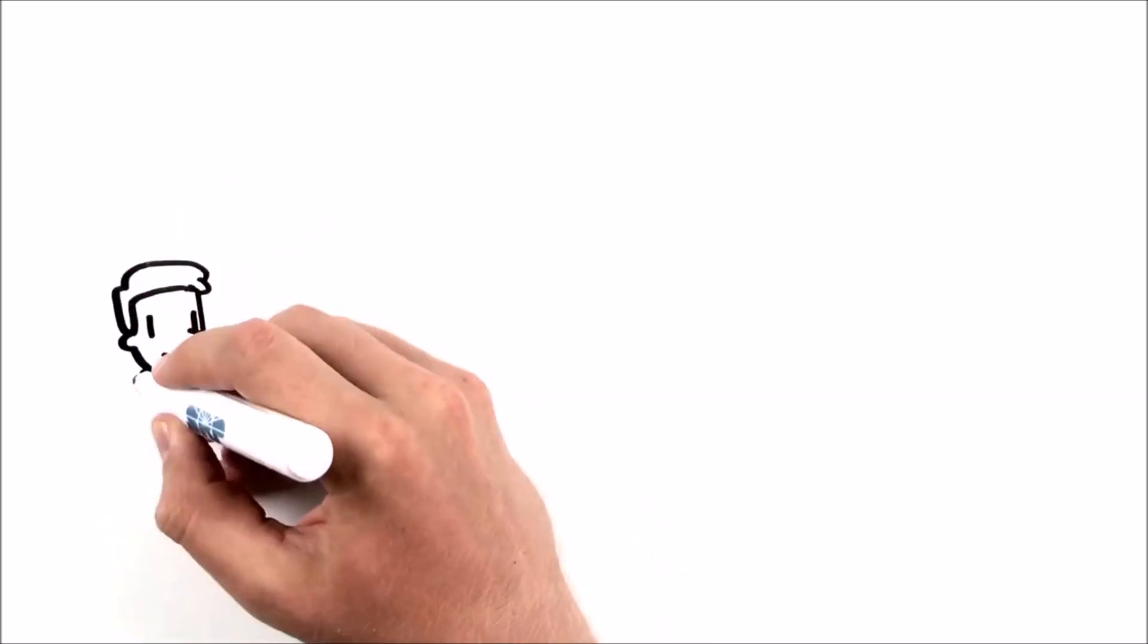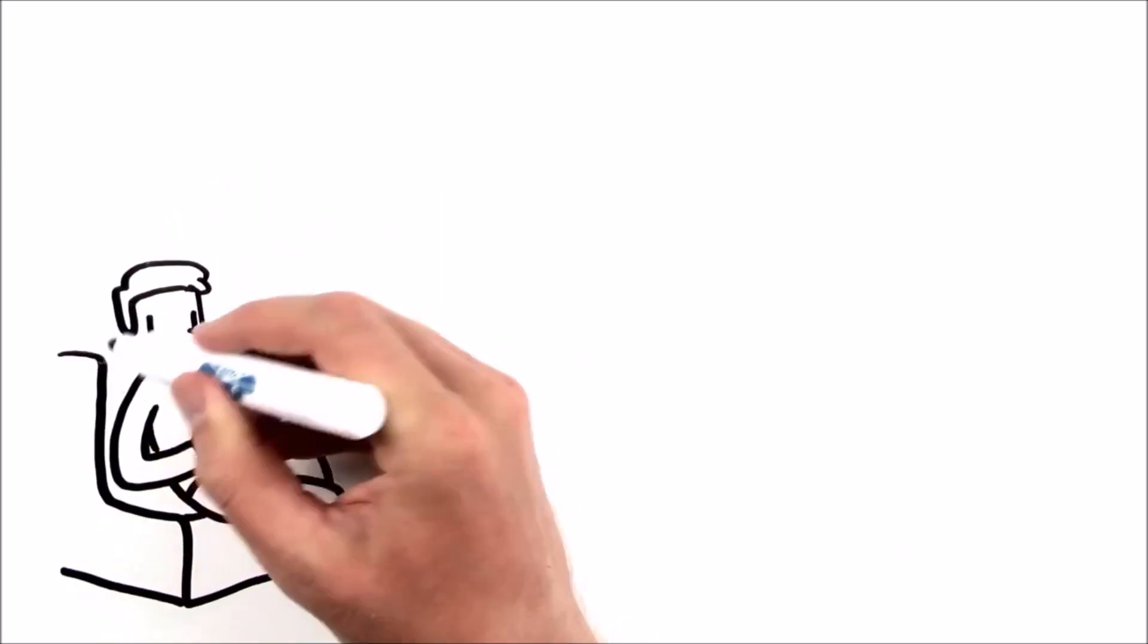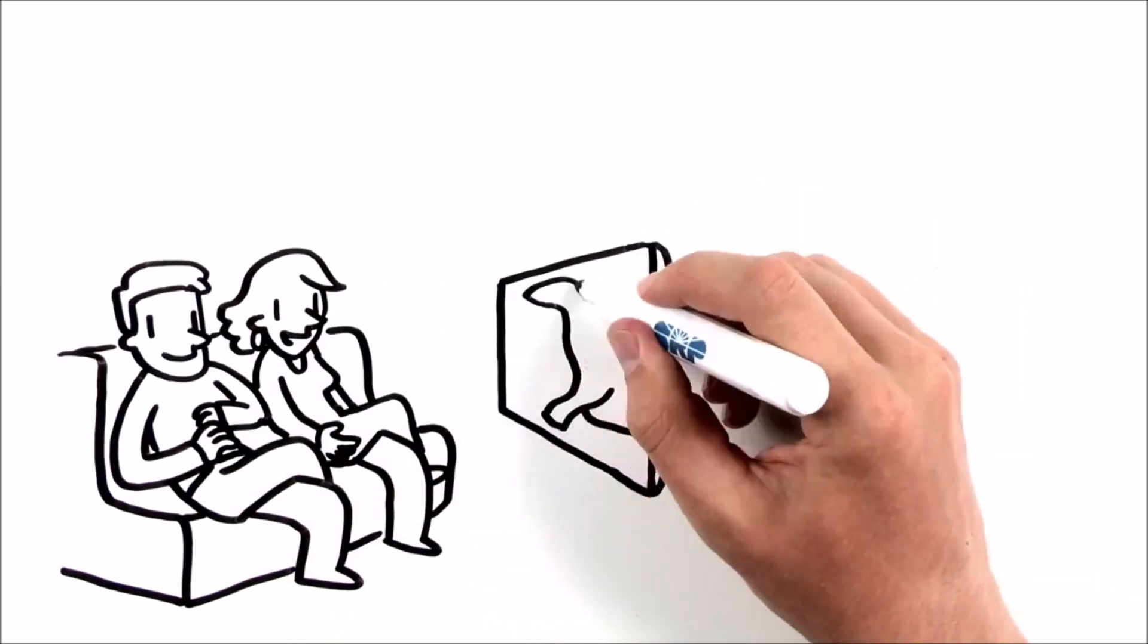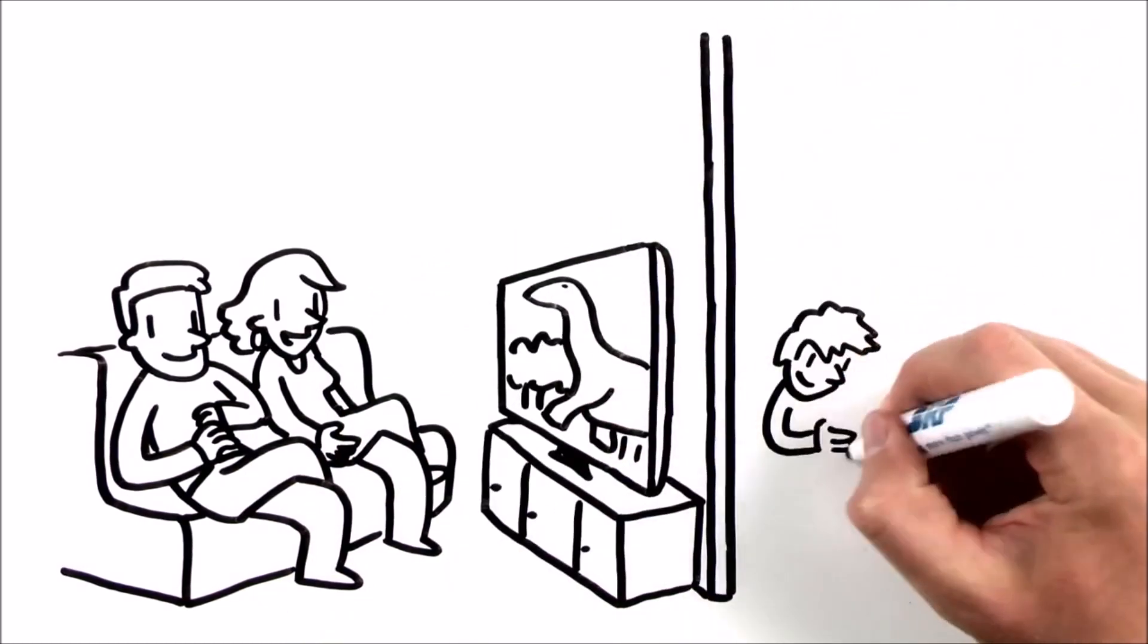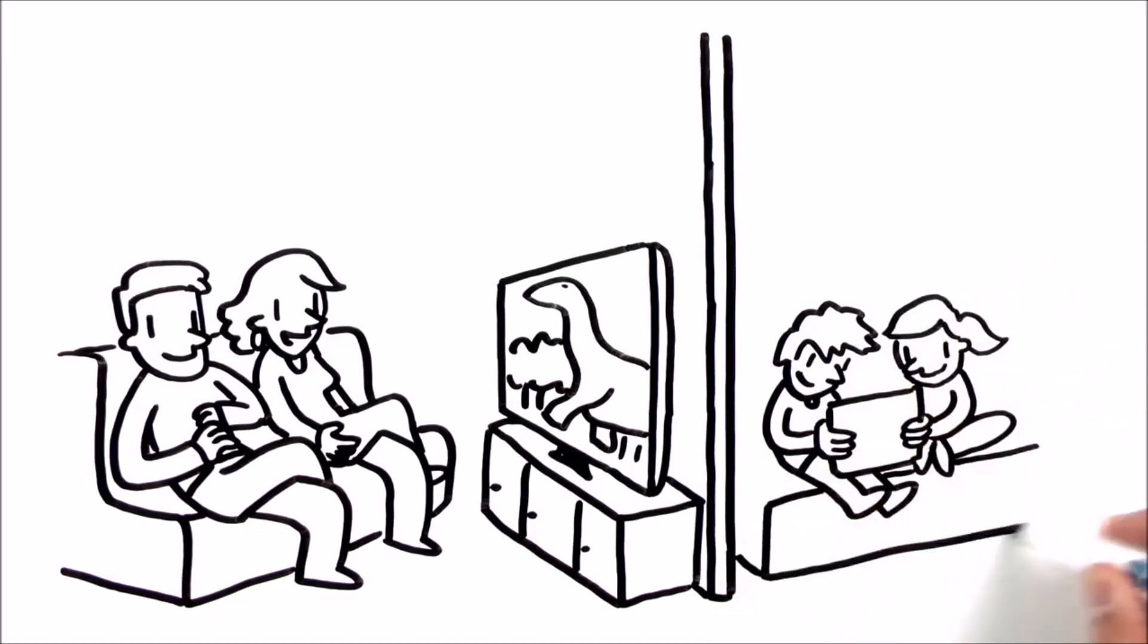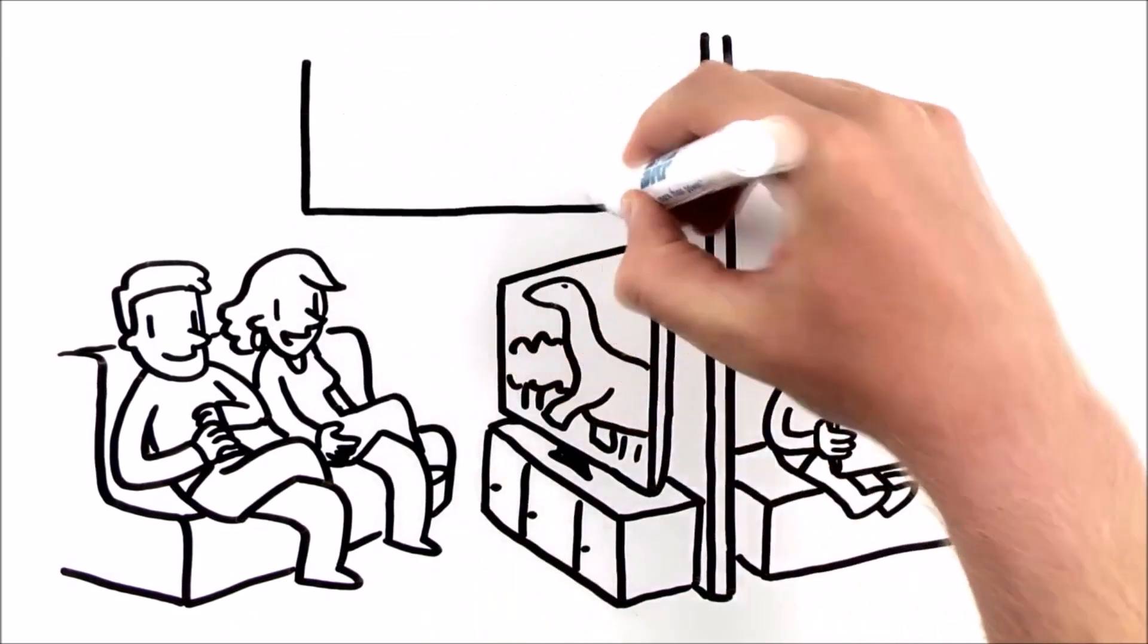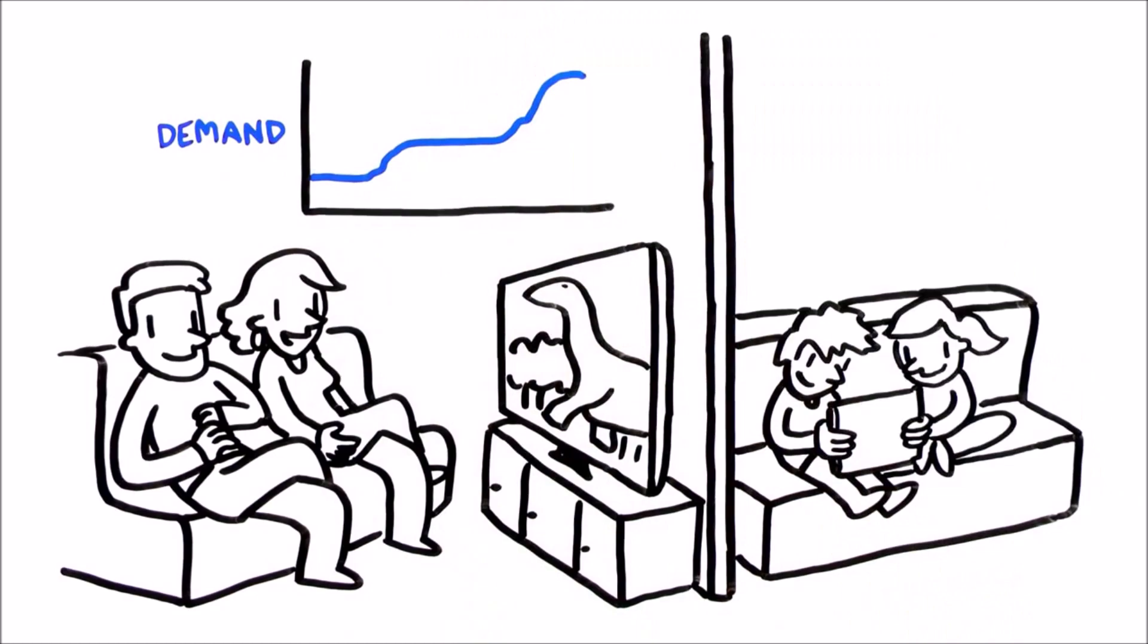What's a peak? It might help to think about electricity like the internet service you need to stream a movie at home. When just one device is streaming, everything works fine. But if two or three people start watching different movies on different devices at the same time, they've created a peak.